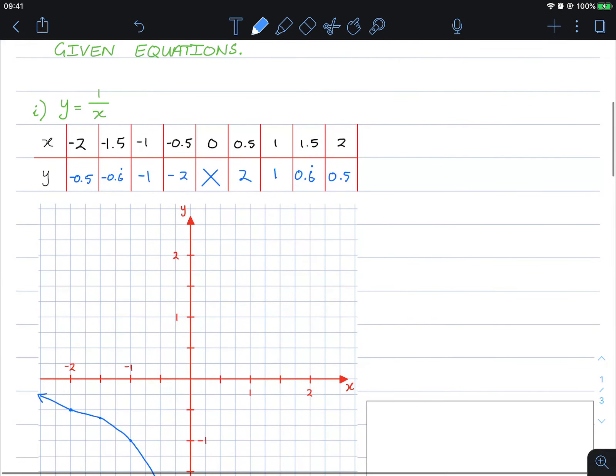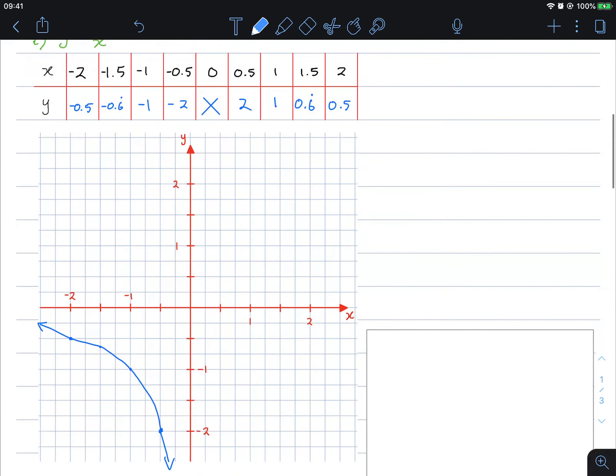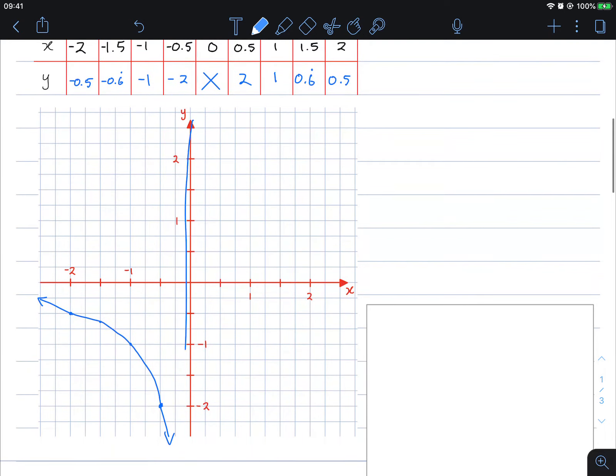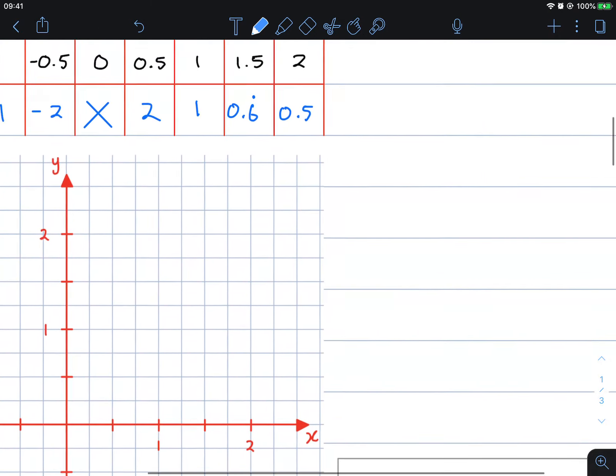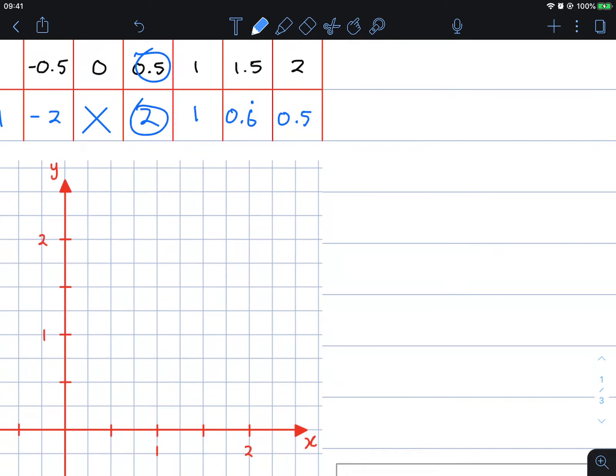At x equals 0, there's nothing along 0, and we repeat it again. So at 0.5 we get 2. 0.5 is here, we get 2.